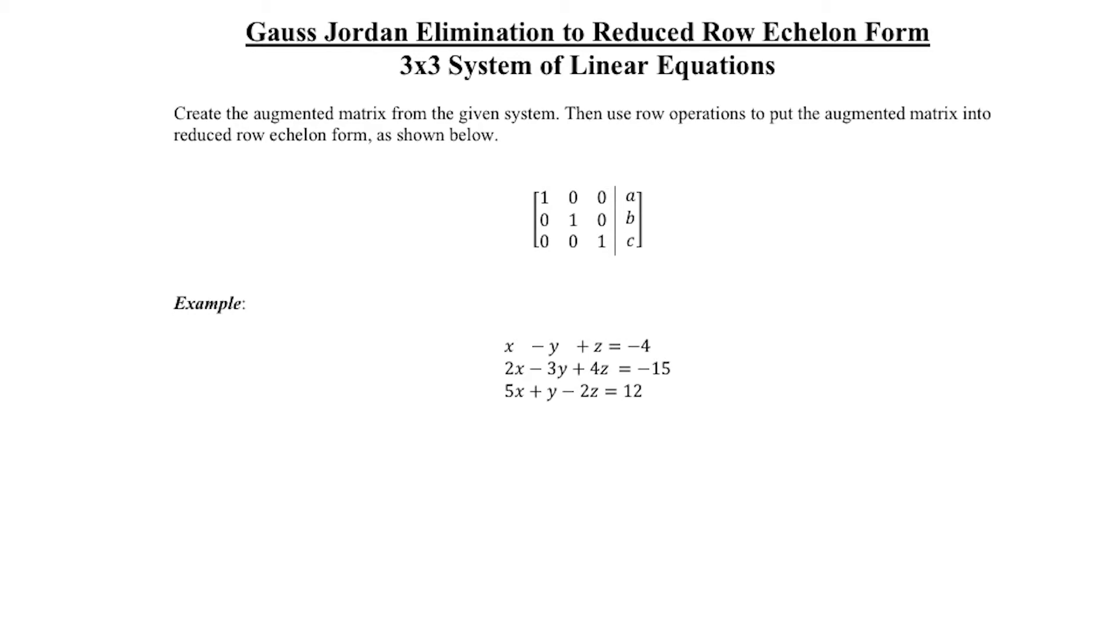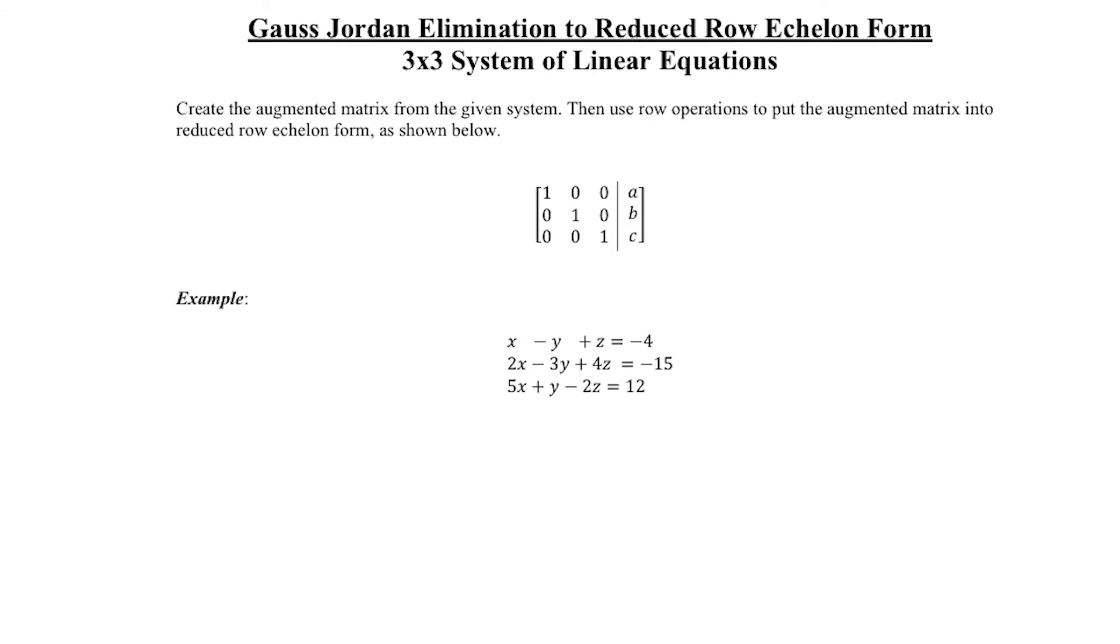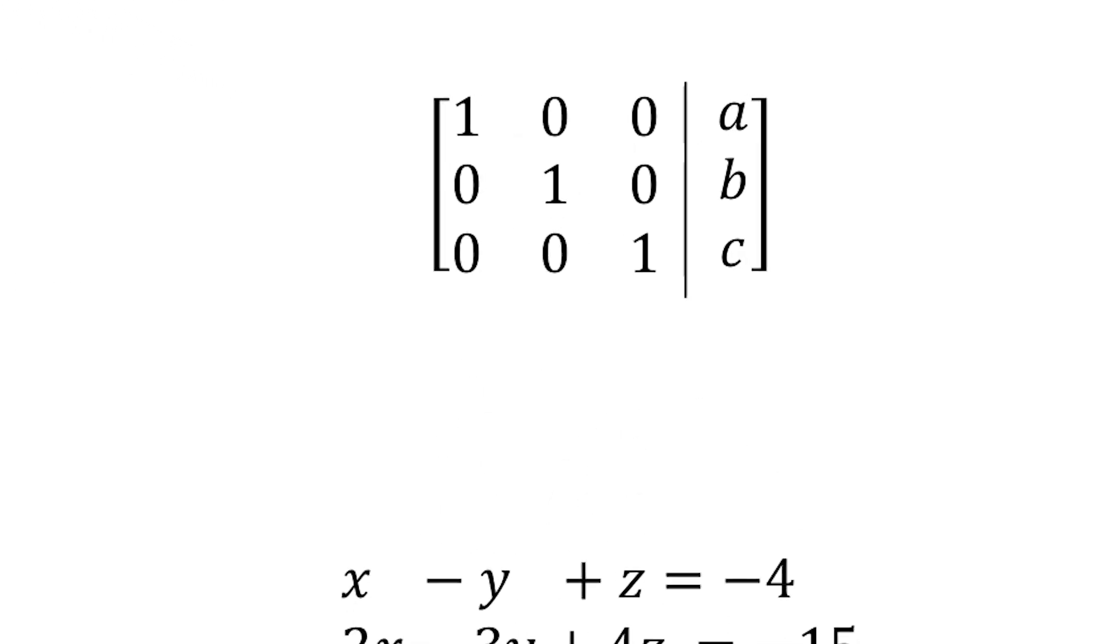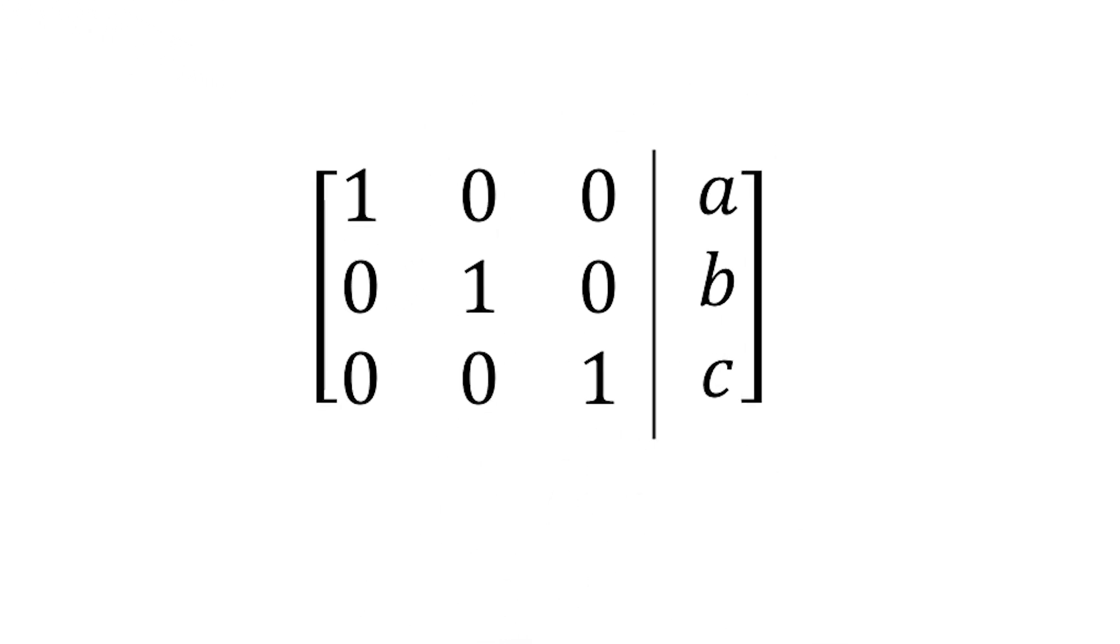Alright, so what we are going to do is set up an augmented matrix and then use row operations to get it in reduced row echelon form which is shown here. Reduced row echelon form is where we have the identity matrix on the left-hand side and that will make it so our solution shows up right here because this is really saying that 1 times x equals a, 1 times y equals b, and 1 times z equals c.